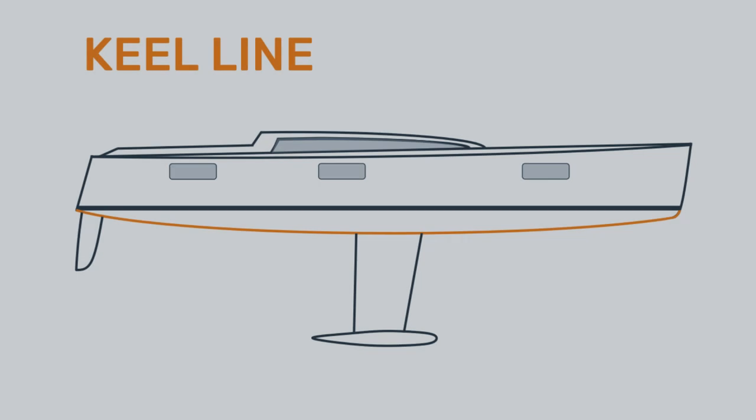The keel line is the intersection of the hull's plane of symmetry with the bottom of the hull.